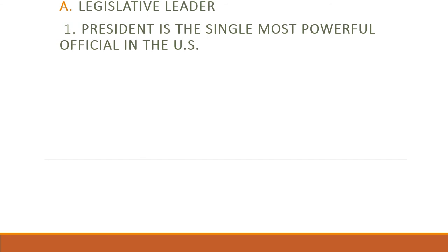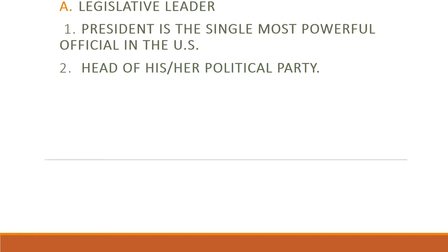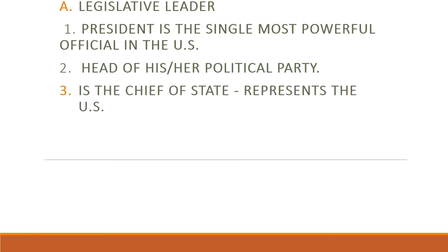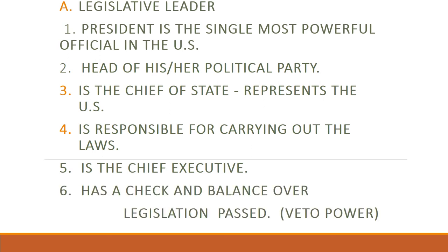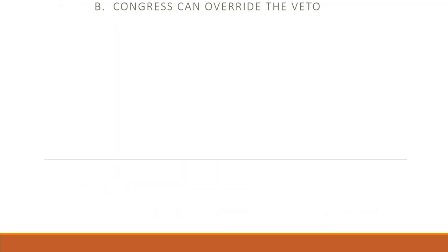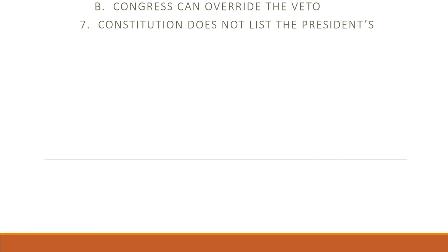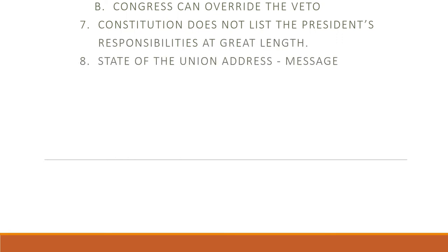The president is responsible for carrying out and enforcing the laws as the chief executive — the tippy top. They also have the veto power as a check and balance over legislation passed by Congress. Congress can override the president's veto with a two-thirds majority. The Constitution doesn't talk a whole lot about the president's specific responsibilities — they've kind of evolved over time, and the president has gotten more and more powerful. The Constitution also calls for the president to give the State of the Union address every year.